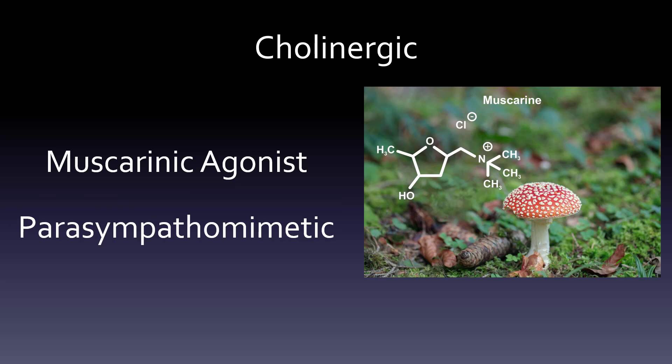The first thing is to get the vocabulary clear. If something is cholinergic, it is also a muscarinic agonist — and this is our muscarin mushroom, where it all began. People use those as synonyms or interchangeably. It is also parasympathomimetic. The opposite of cholinergic is anticholinergic, the opposite of muscarinic is antimuscarinic or muscarinic antagonist, and the opposite of parasympathomimetic is parasympatholytic.